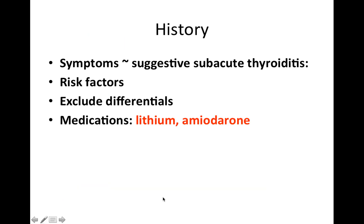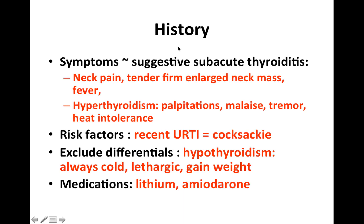In terms of history, I would assess symptoms to suggest subacute thyroiditis, assess for risk factors, exclude differentials, and check for medications such as lithium or amiodarone. Symptoms suggesting subacute thyroiditis include neck pain, a tender, firm, enlarged neck mass, fever, and hyperthyroid signs such as palpitations, malaise, tremor, and heat intolerance.